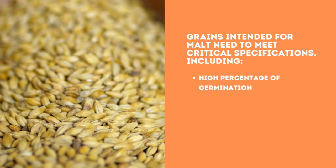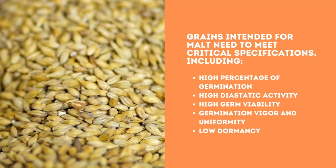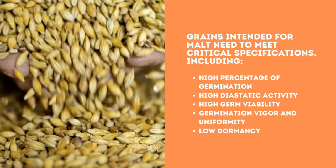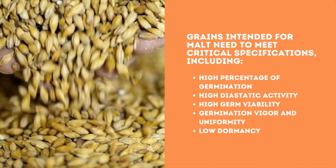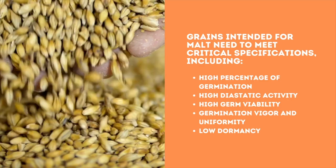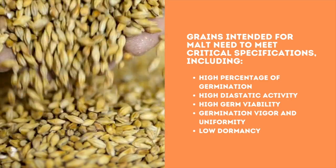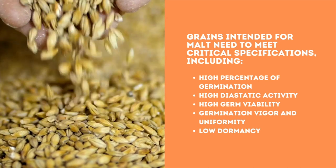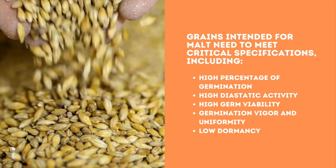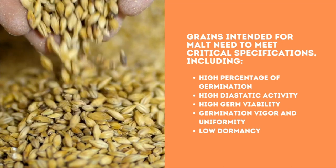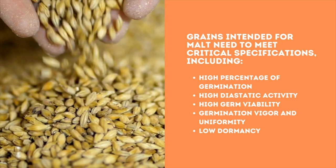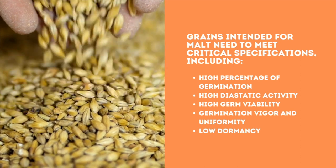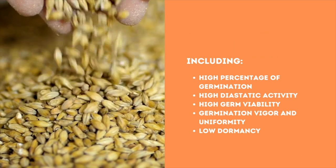Grains intended for malt need to meet critical specifications, including: a high percentage of germination, since a high proportion of grains capable of germinating is essential as the process requires high levels of enzymes; high diastatic activity; high germ viability; germination vigor and uniformity; and low dormancy — the time it takes for a seed to germinate should be as short as possible.